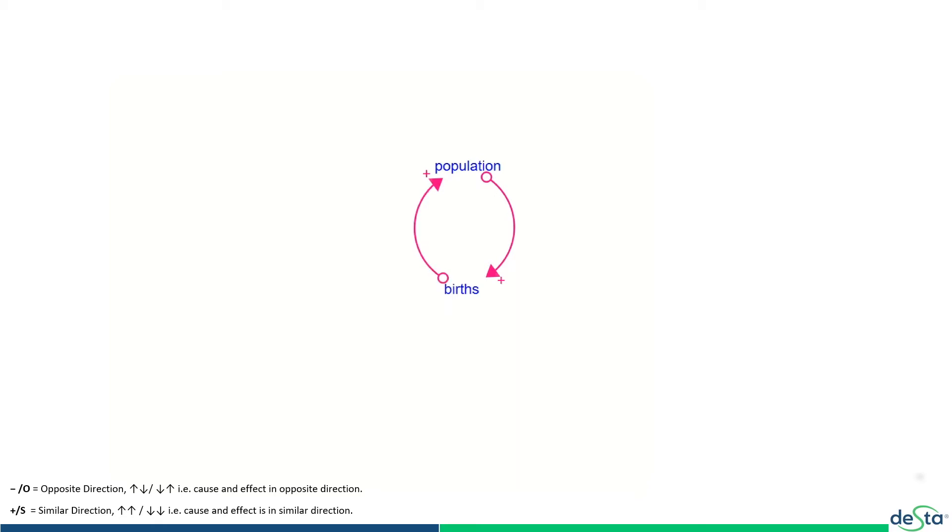Or you can use an S symbol here. S means similar relationship - if one variable goes up, the other goes up. Plus also means similar relationship. So this helps us understand that there is a feedback loop here. More people lead to more births, more births lead to addition in the stock of population, and thereby we know that it is a reinforcing loop, which means both variables are reinforcing the growth of each other.